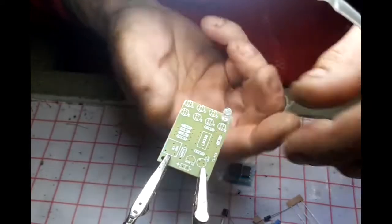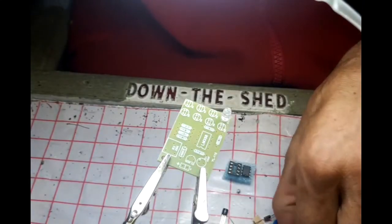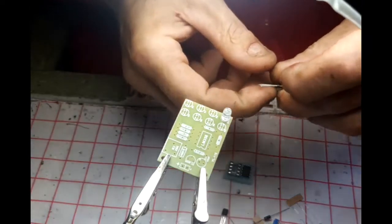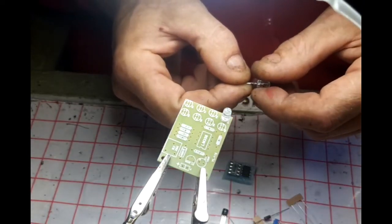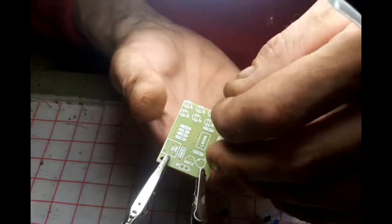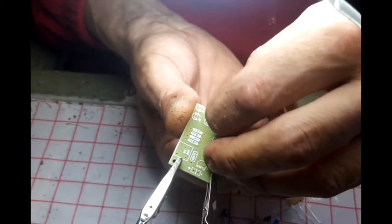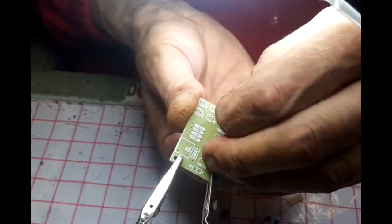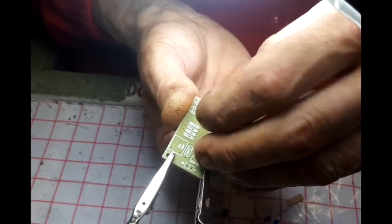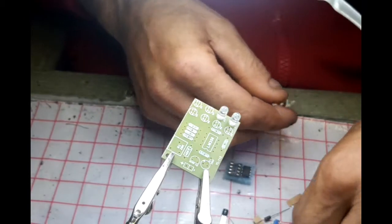The negative leg goes in the pointy end of the arrow which is cut off by a vertical line. That's the negative or the cathode. The long leg or the anode is positive. This one doesn't want to go in, it's quite tight.